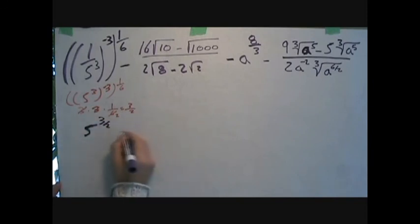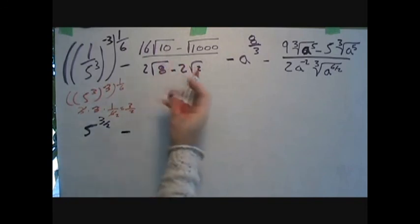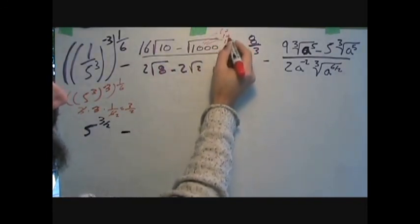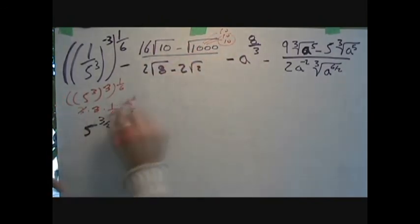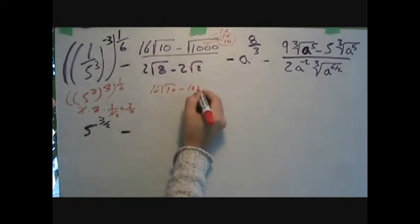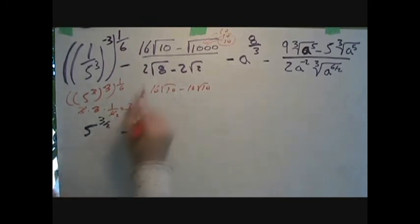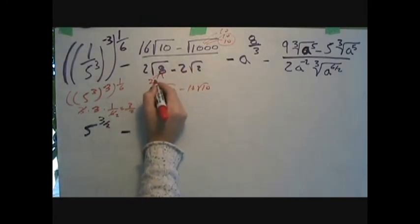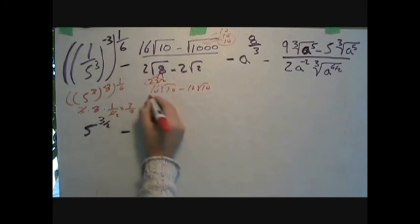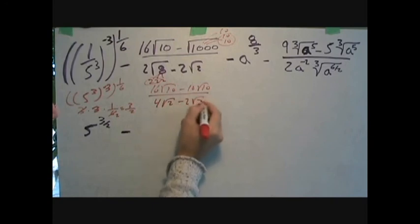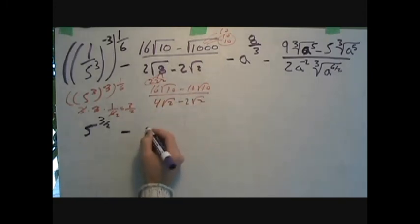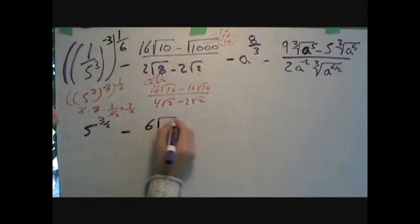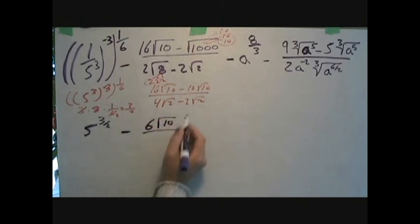Now let's deal with the radical terms. 1000 breaks down into 10 × 10 × 10; square root means grab two things and bring them out, so this becomes 16√10 minus 10√10. For the 8 term: 8 is 2 × 2 × 2, so two 2s come out multiplied by the 2 in front, giving 4√2 minus 2√2. Combining like terms: 16√10 minus 10√10 is 6√10, and we have 4√2 minus 2√2 in the denominator.